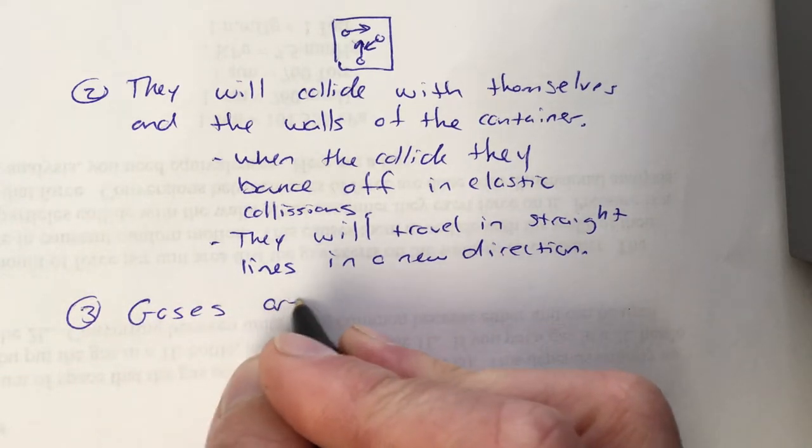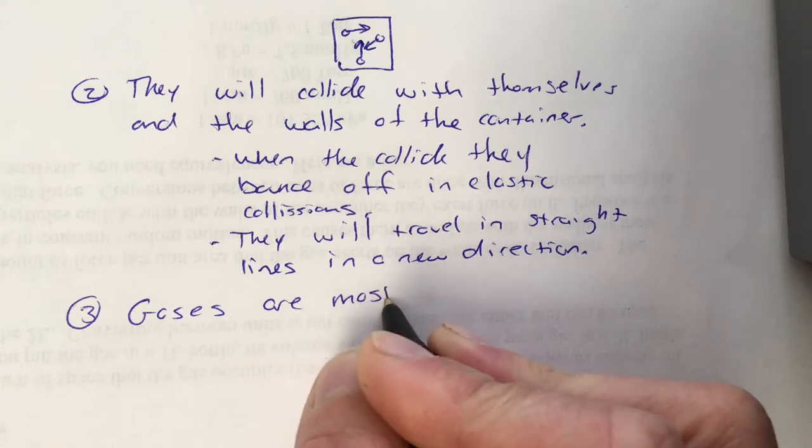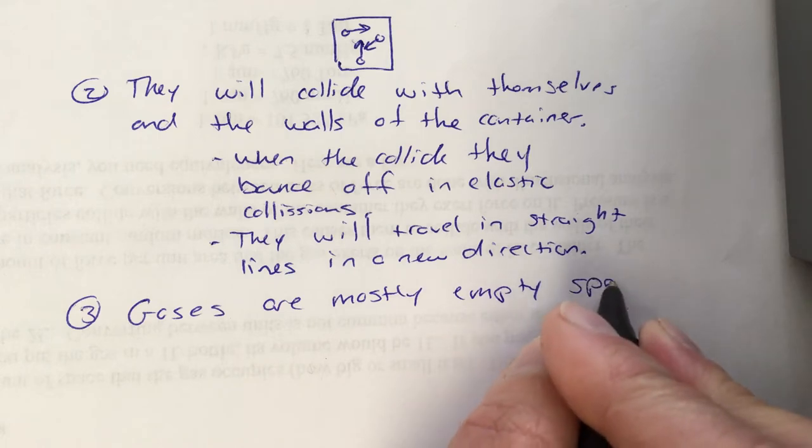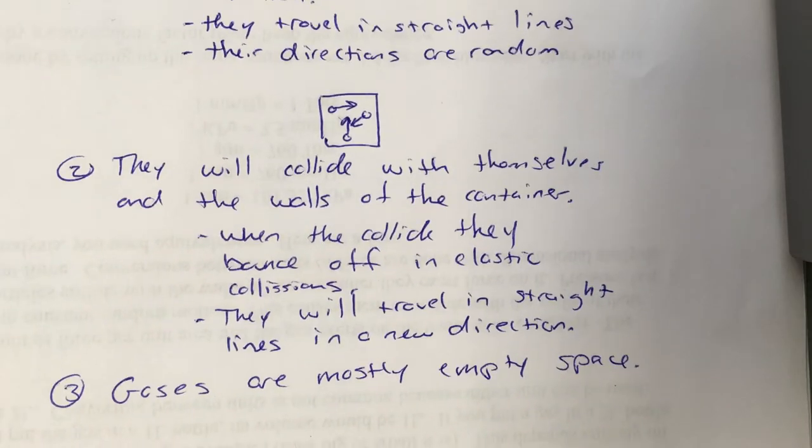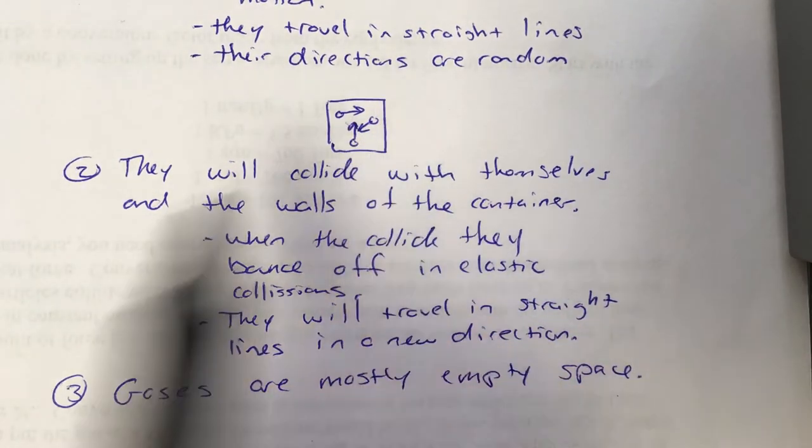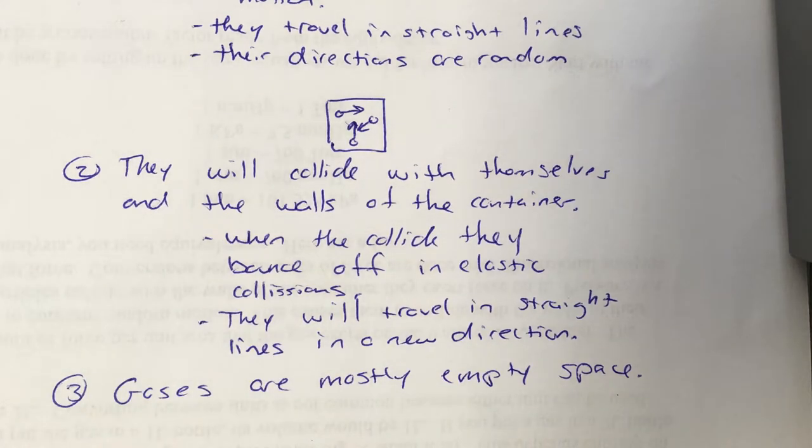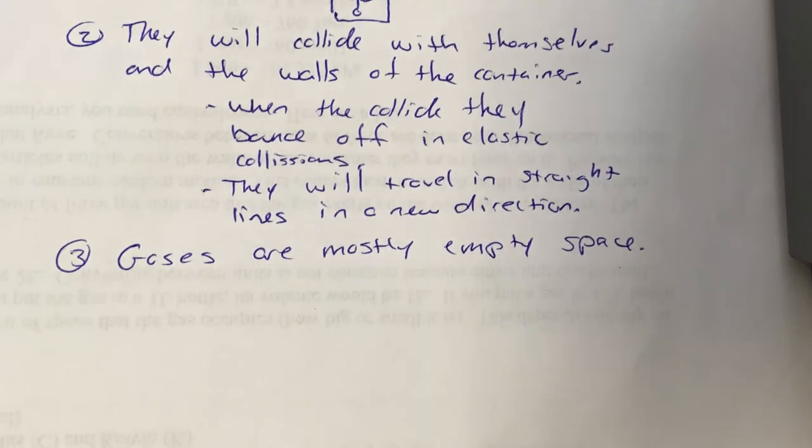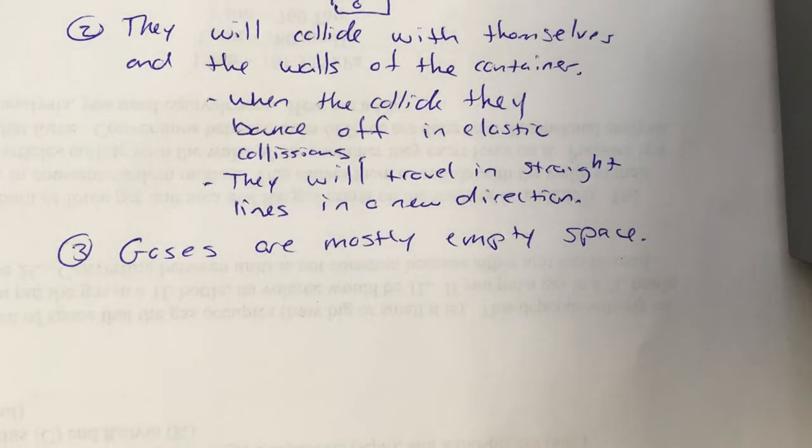Gases are mostly empty space. Let me go back to this picture that I drew of the gas. I didn't put many particles in there, and I made sure that there was a good bit of distance between those particles, because that's the way a gas is. The particles are relatively far apart. There's a lot of empty space in a gas, a lot of room for them to move around.